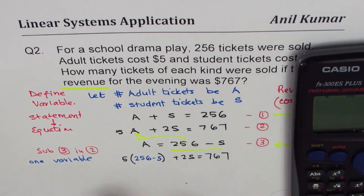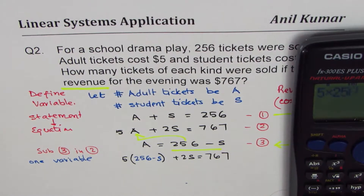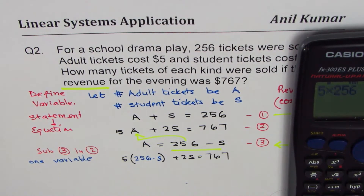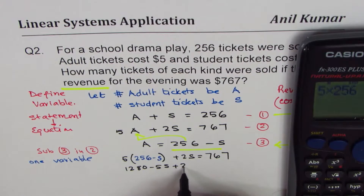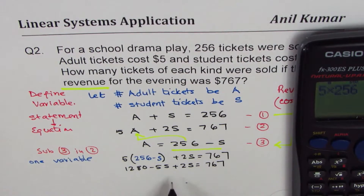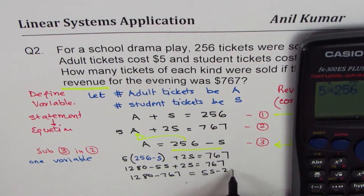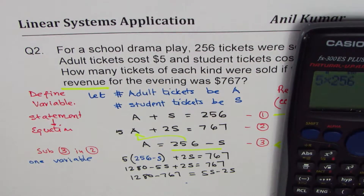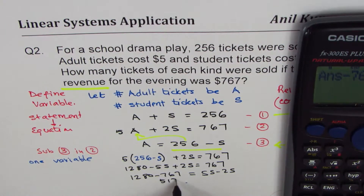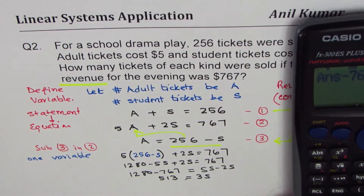Now we expand the bracket. 5 times 256 equals 1280. So we get 1280 minus 5S plus 2S equals 767. Bringing variables to one side: 1280 minus 767 equals 5S minus 2S. That gives us 513 equals 3S.